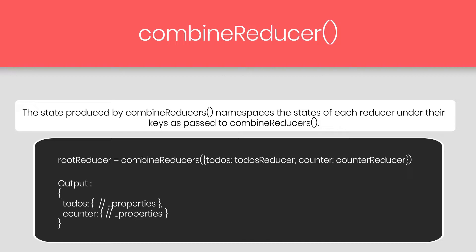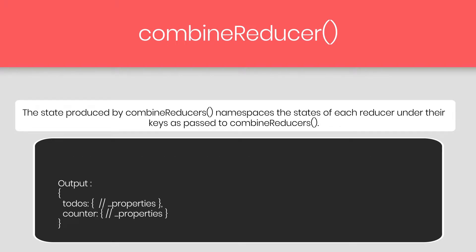You can use ES6 property shorthand notation as well. For example, if you use Combined Reducer and pass counter and todos like this, then this is equivalent. Now let me create a very simple example to show you how you can use Combined Reducer in a Redux application.